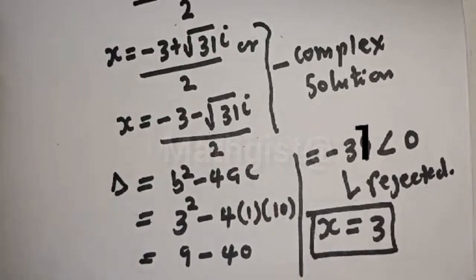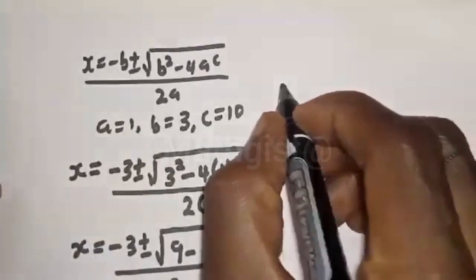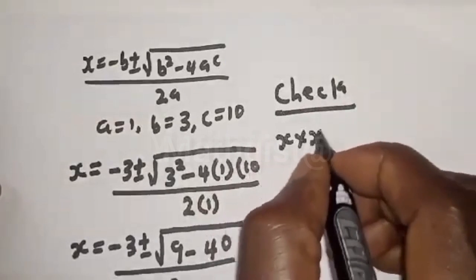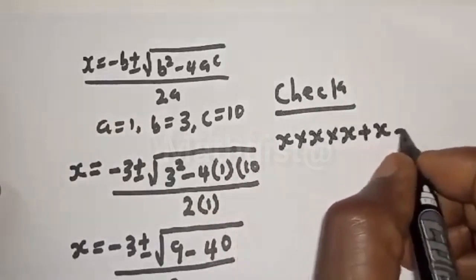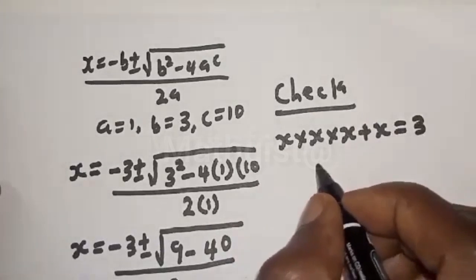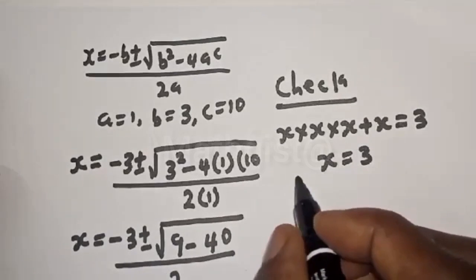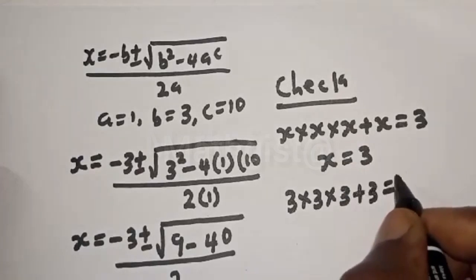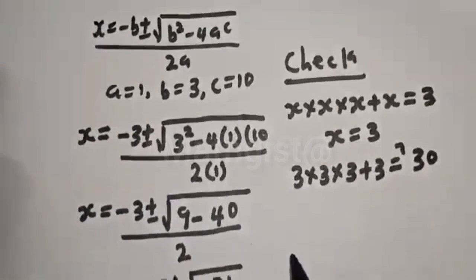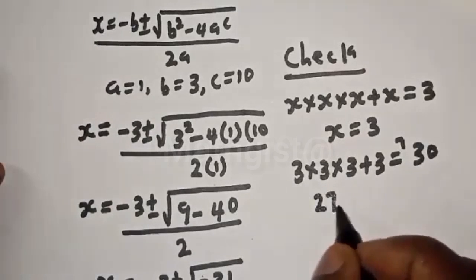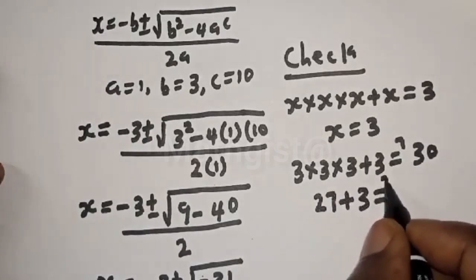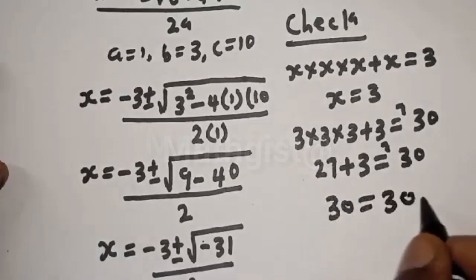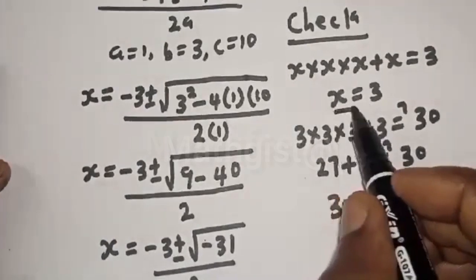Let's check: s × s × s + s = 30, where s = 3. That is 3 × 3 × 3 + 3 = 9 × 3 + 3 = 27 + 3 = 30, which equals 30. This satisfies the given equation, confirming s = 3 is correct.